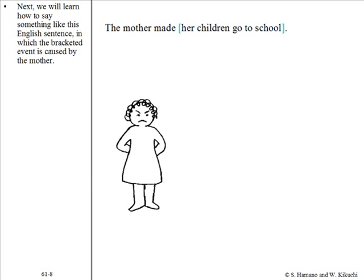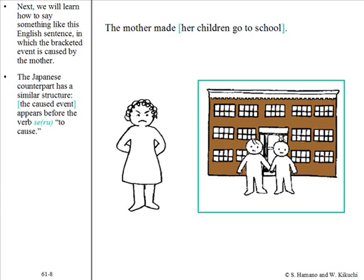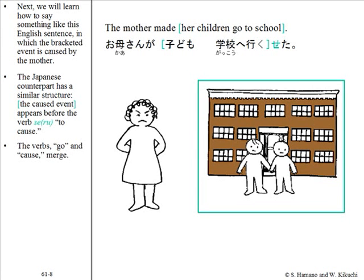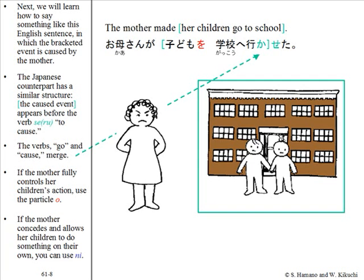Next, we will learn how to say something like an English sentence in which a bracketed event is caused by the mother. The Japanese counterpart has a similar structure — the caused event appears before the verb させる, meaning 'to cause,' and the verbs merge. If the mother fully controls her children's action, use the particle O: お母さんが子供を学校へ行かせた. If the mother concedes and allows her children to do something on their own, use NI: お母さんが子供に、子供だけでプールへ行かせた.